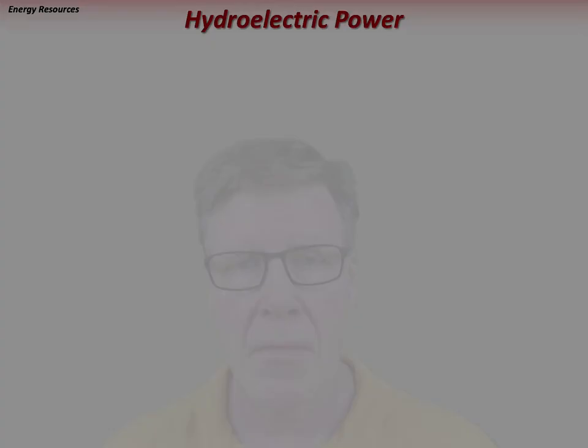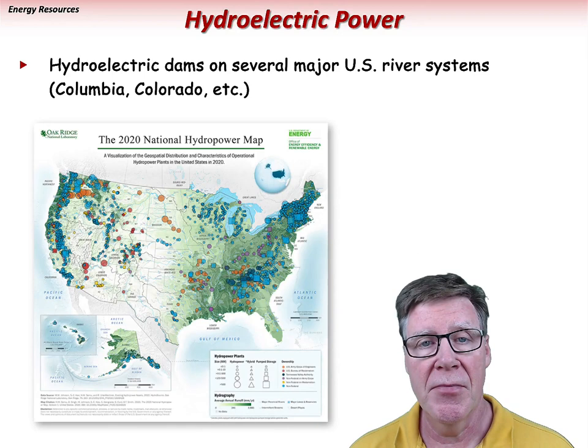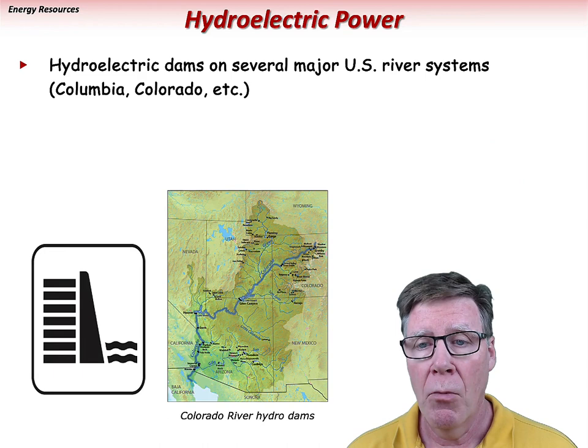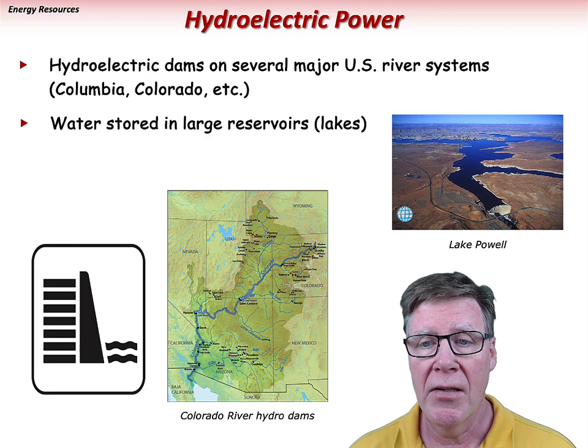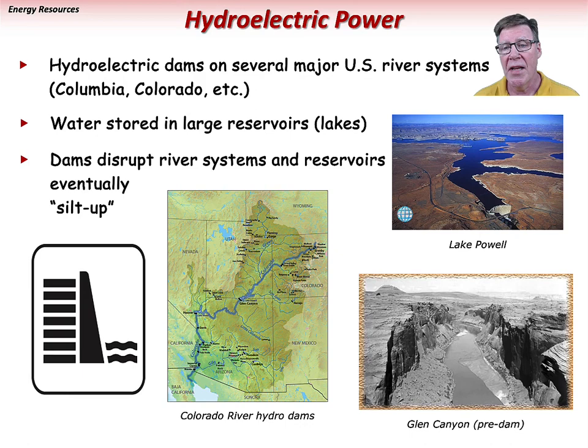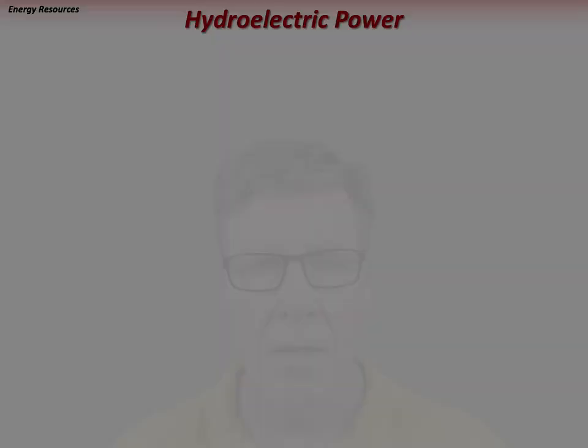Hydroelectric dams exist on several major river systems in the U.S., including the Columbia, Colorado, and Tennessee rivers. In the southwest, a number of dams have been built on the Colorado River, with water stored in large reservoirs like Lake Powell behind the Glen Canyon Dam. Large dams significantly disrupt river systems both above and below the dam, and reservoirs will ultimately silt up from trapped sediment. In Arizona, hydropower produces 6.5% of its electricity as of 2017.